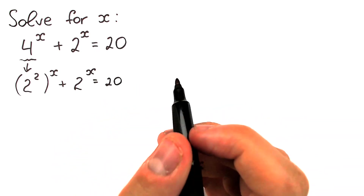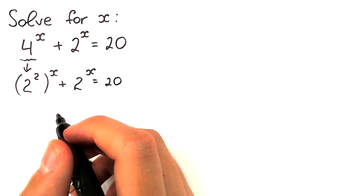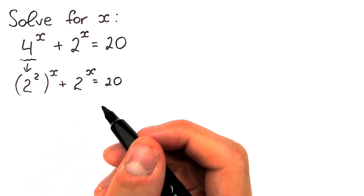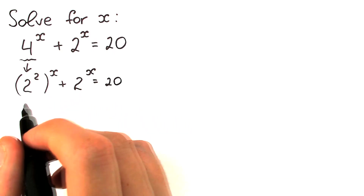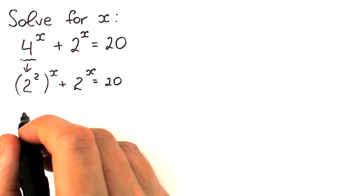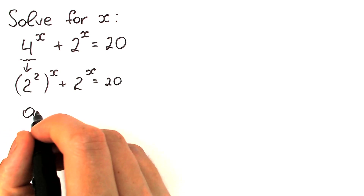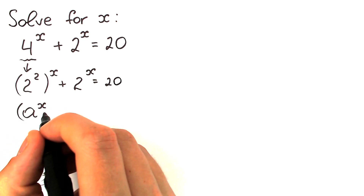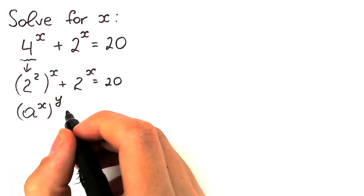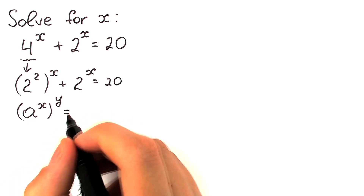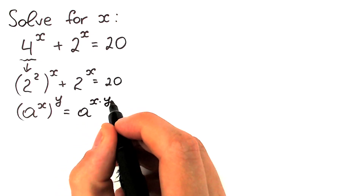Now I want to show you a really important property — some call it the rule of interchange. For example, if you have a to the power x, raised to the power y, everyone knows this equals a to the power x times y, as a product.